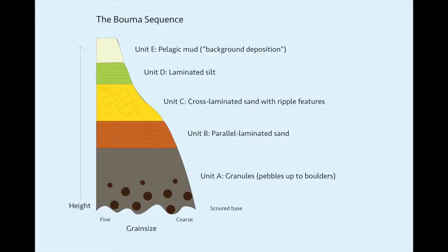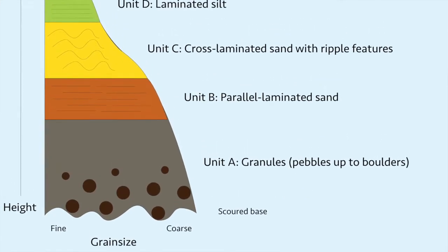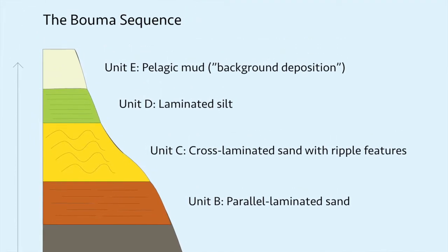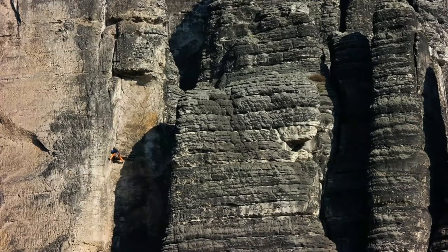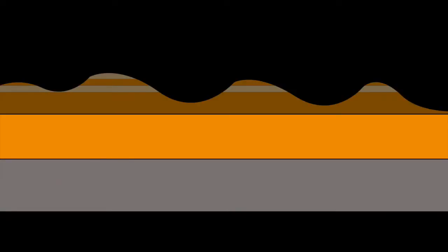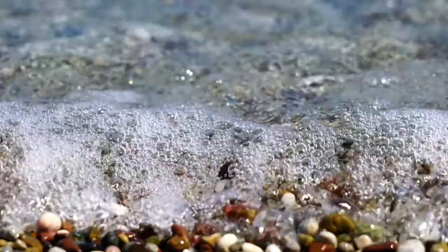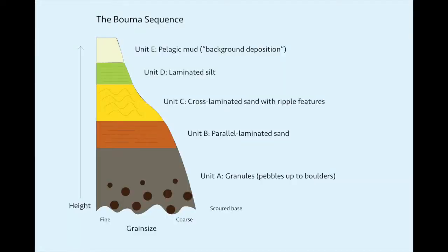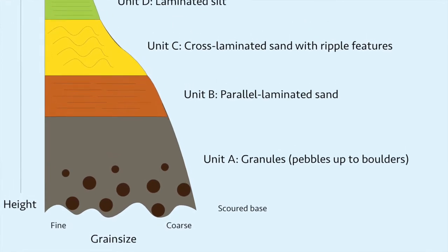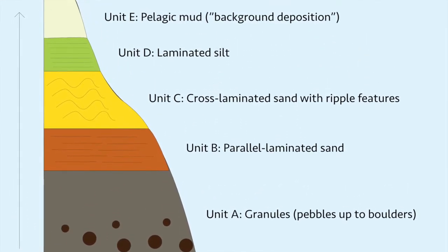I can't make a video about turbidites without at least mentioning the Bouma sequence. This is an ideal depiction of a turbidite and the layers that make it up. I'd suggest looking at this sequence in your own time, because it is a useful model — but it is just that, a model. Real turbidites hardly ever follow the Bouma sequence exactly. For one thing, the deposition of a new turbidite tends to erode away the top parts of the turbidite below it, which means you never see those top parts of the Bouma sequence. Also, the exact structures that form depend on the density of the turbidity current, the position of rocks within that current, and so on. So you don't always see what this model describes. It's an ideal approximation and it has its uses, but you should be aware that real turbidites are more complex than this.